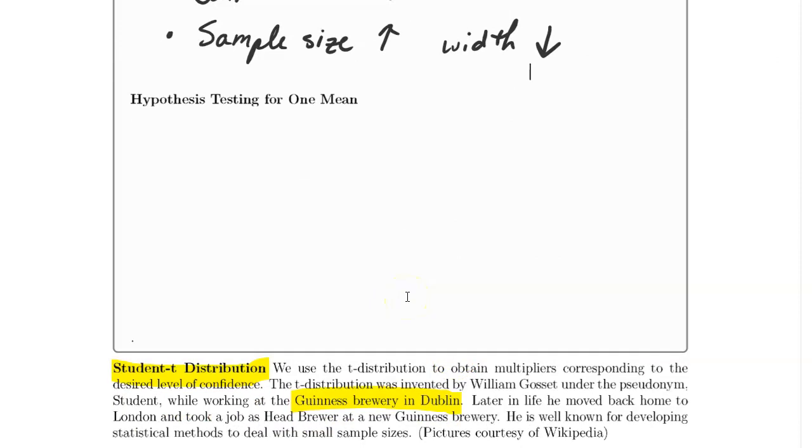When we're hypothesis testing for one mean, again the concepts are the same, it's just that the tools become different. Our null hypothesis is that the true mean is equal to some value mu-naught. Our alternative hypothesis is going to be that the true mean is either greater than, less than, or not equal to that value.